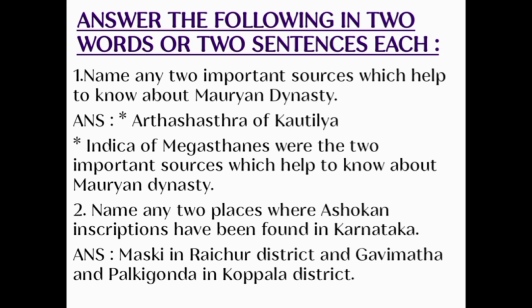Question number 2: Name any two places where Ashokan inscriptions have been found in Karnataka. Answer: Maski in Raichur district, and Gavimatha and Palki Gunda in Koppala district.